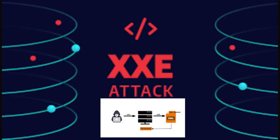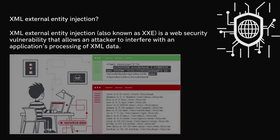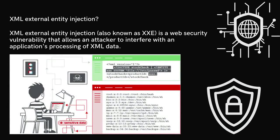Now let's understand XXE attacks. In this attack, malicious actors inject specially crafted XML code into an application that processes XML data. These injected codes contain references to external entities that the attacker controls. When the application parses the XML, it unwittingly processes these entities, leading to unintended consequences. XML external entity injection, also known as XXE, is a web security vulnerability that allows an attacker to interfere with an application's processing of XML data. It often allows an attacker to view files on the application's server file system and interact with any backend or external systems. In some situations, an attacker can escalate an XXE attack to compromise the underlying server by leveraging the XXE vulnerability to perform server-side request forgery, also known as SSRF attacks.